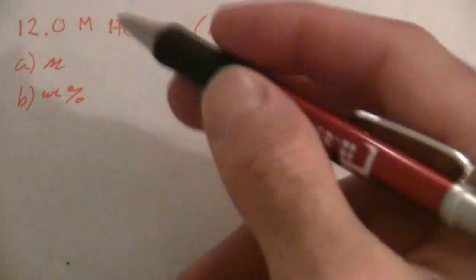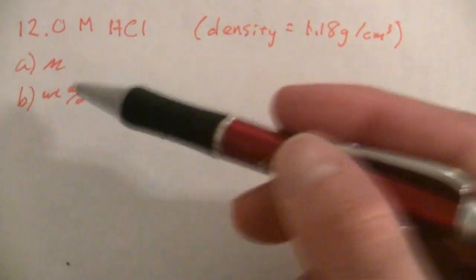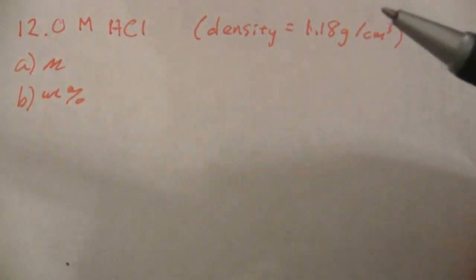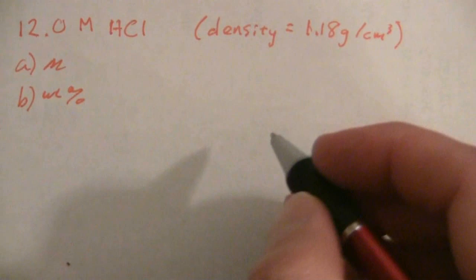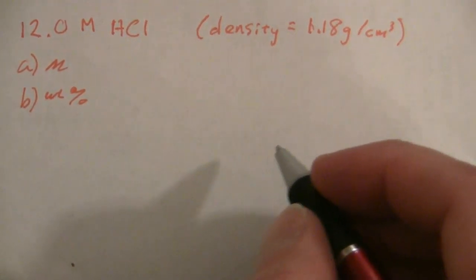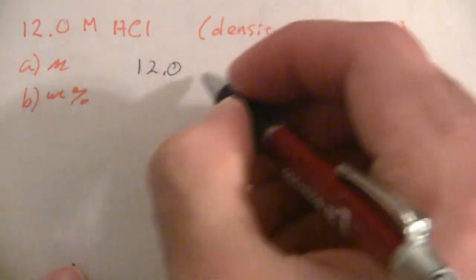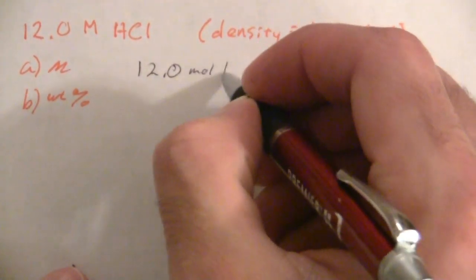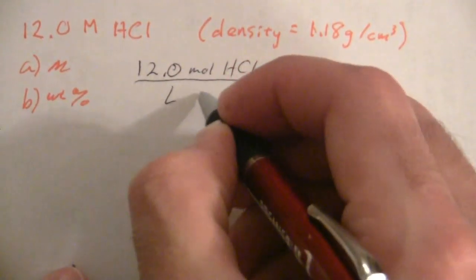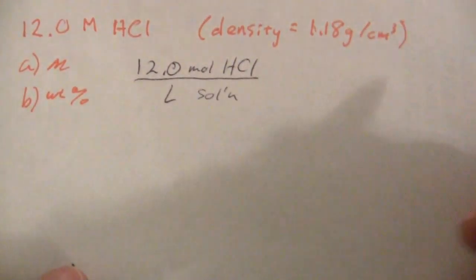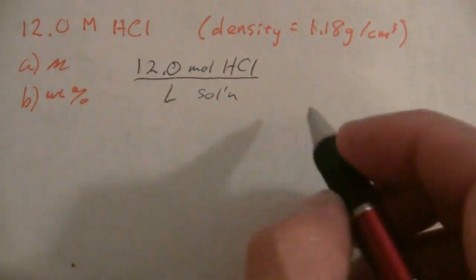Okay, so first of all let's expand these units so we can make something of it, because just looking at this you don't know how they relate together. But if we take this and we say our 12 molar is really 12.0 moles of HCl per liter of solution, and we do the same with the molality and the weight percent.